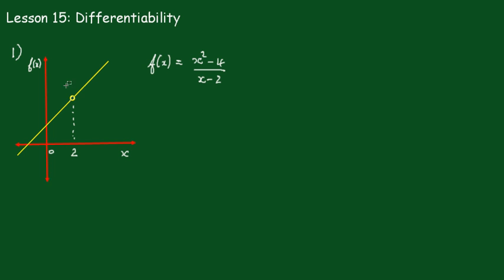We'll differentiate this function using the quotient rule. So u here is going to be x squared minus 4, and v is x minus 2. So du is 2x and dv is equal to 1.